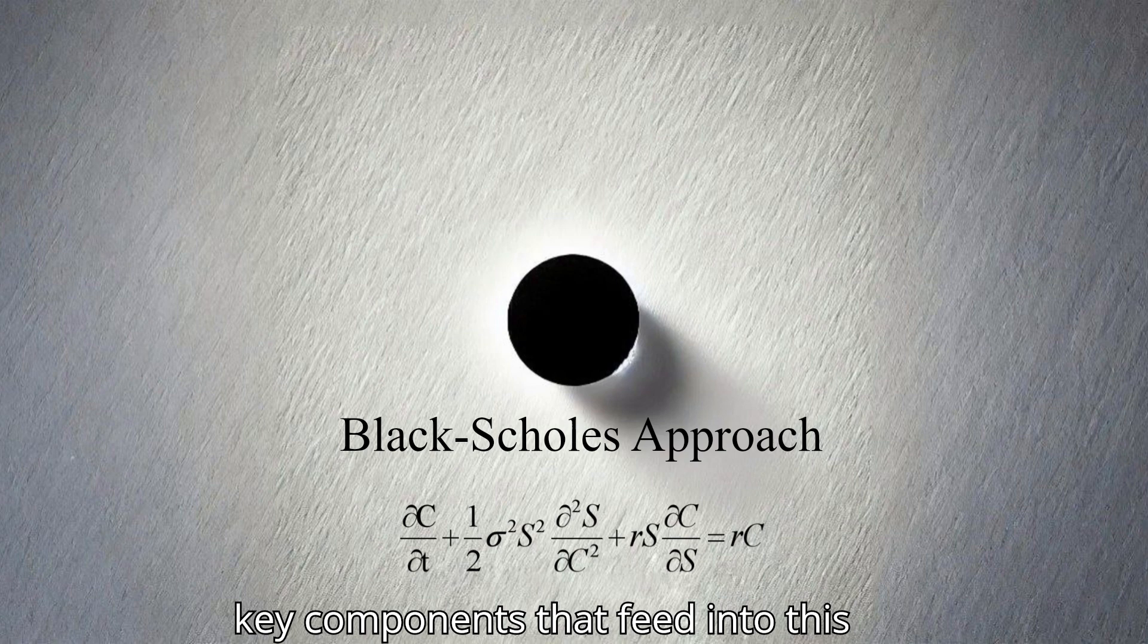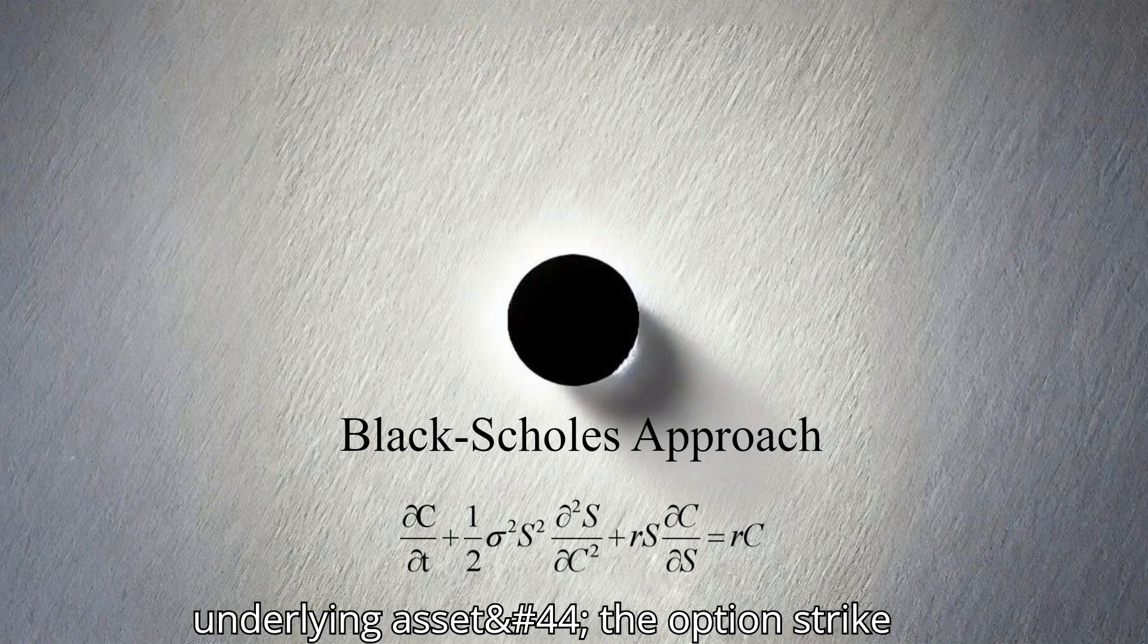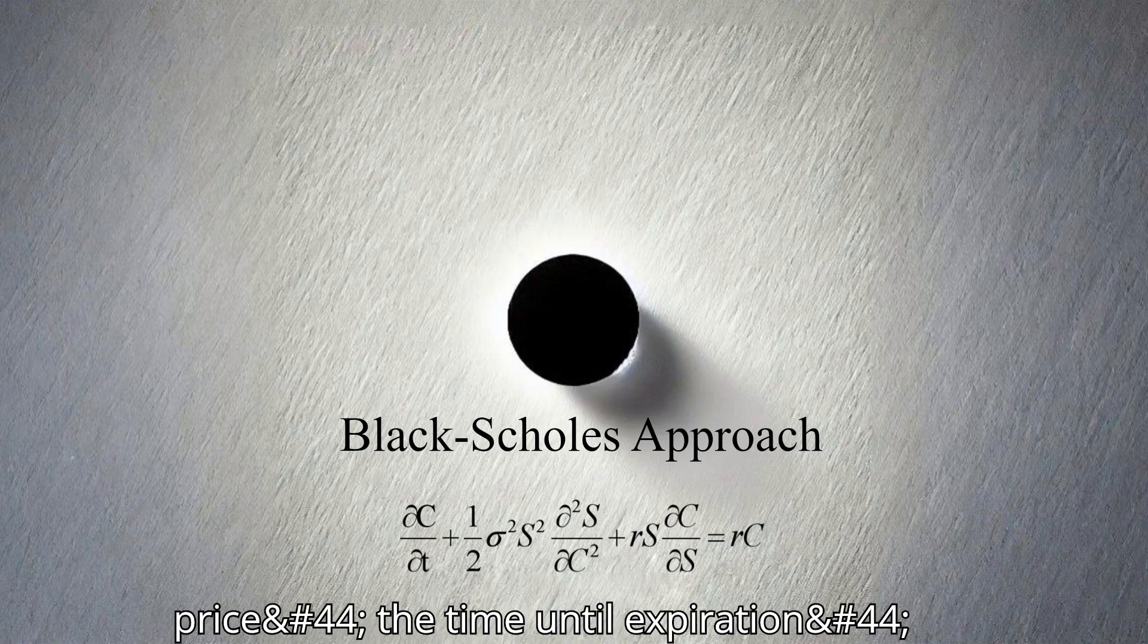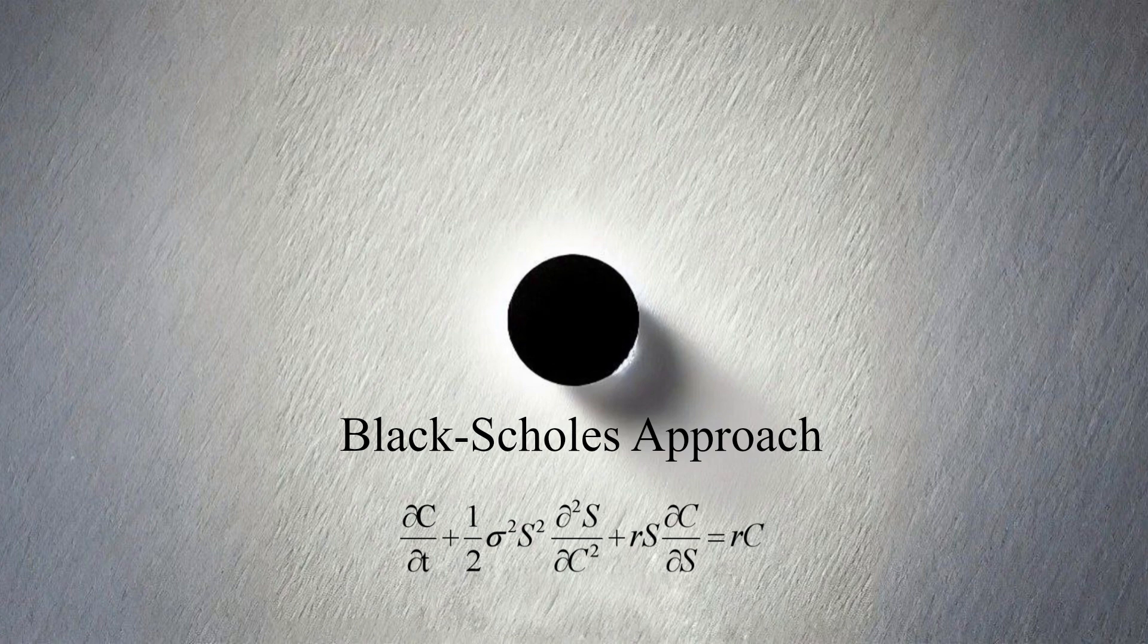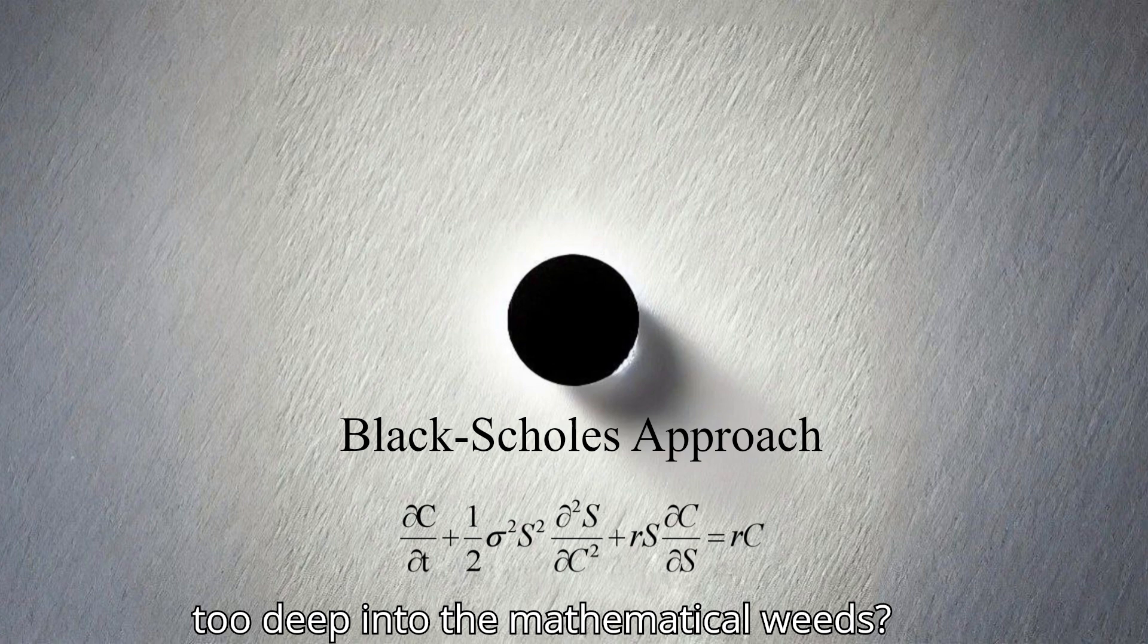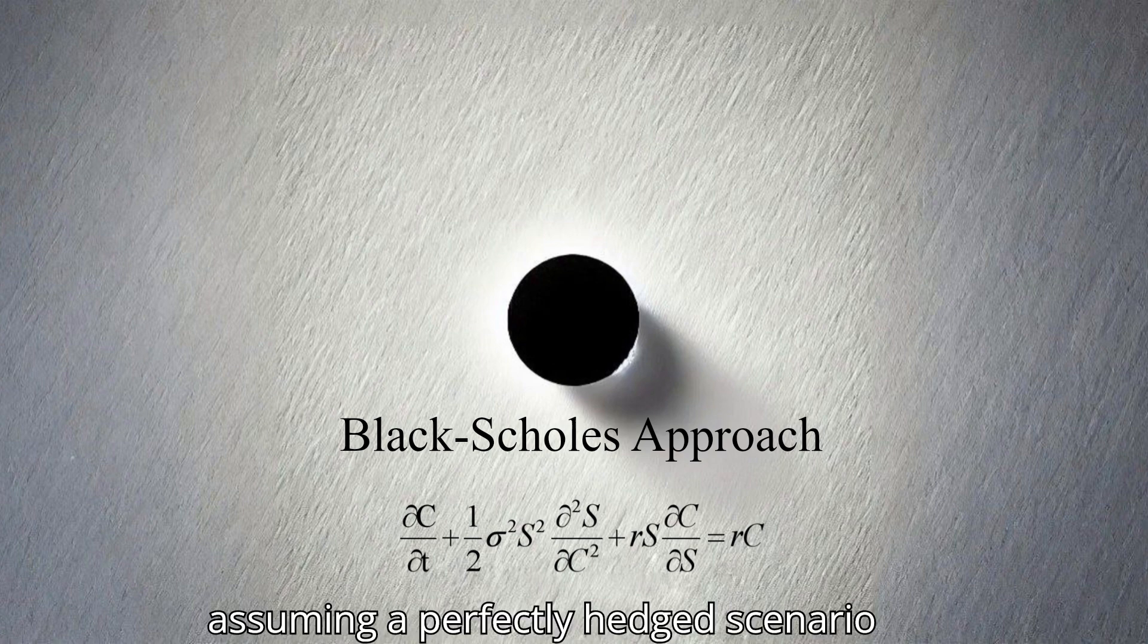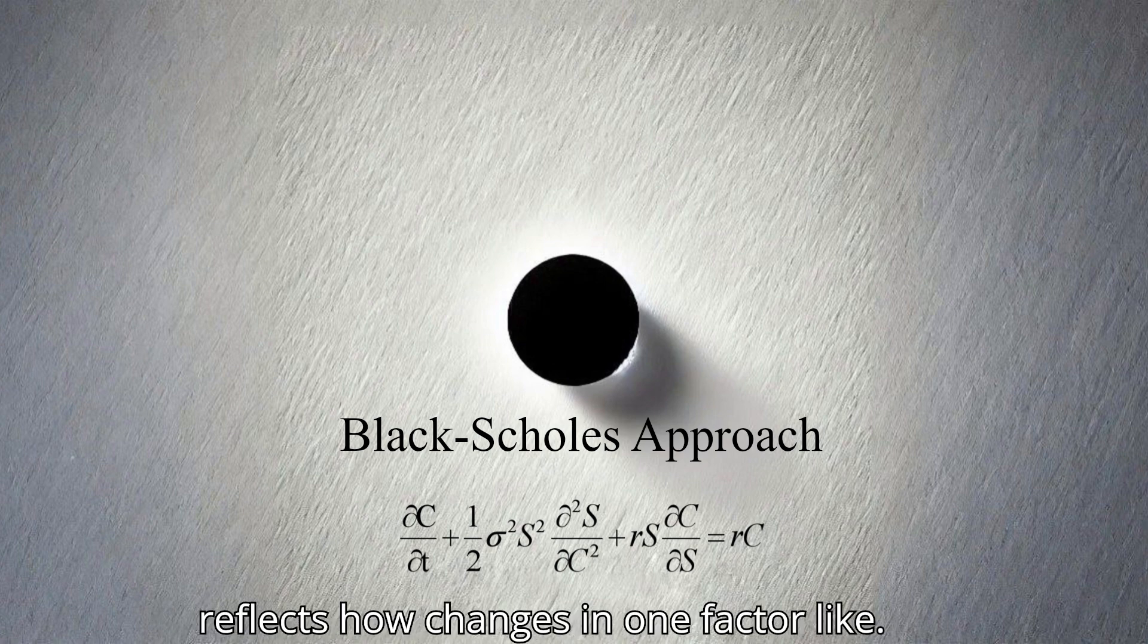It formed the foundation of the Black-Scholes formula. What are the key components that feed into this formula? The Black-Scholes formula takes into account the current price of the underlying asset, the option's strike price, the time until expiration, the risk-free interest rate, and a crucial factor known as volatility, which measures how much the asset's price fluctuates. The formula calculates a theoretical price for the option, assuming a perfectly hedged scenario where all risk is eliminated. The interplay of these components reflects how changes in one factor, like volatility or time to expiration, can impact the option's price.